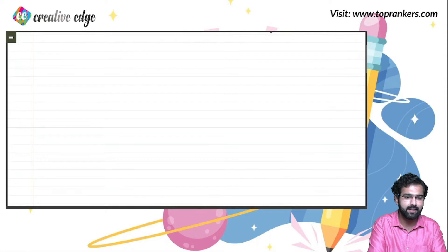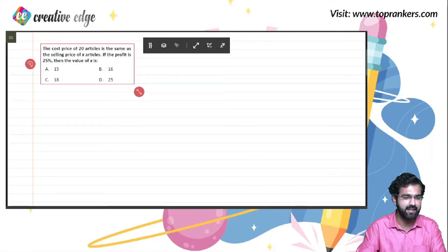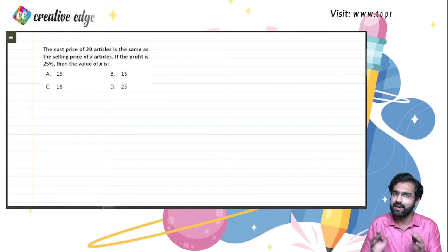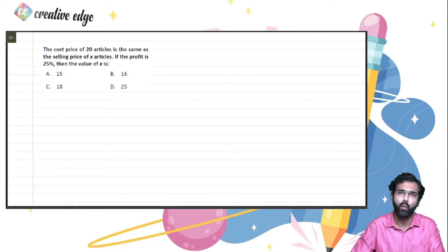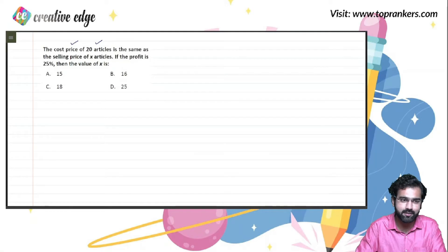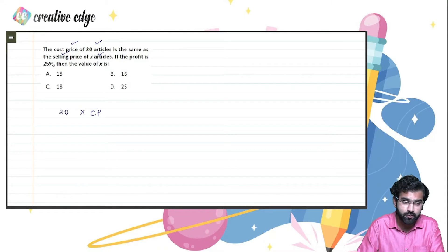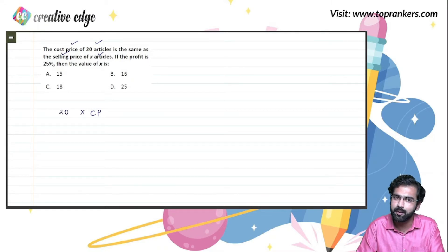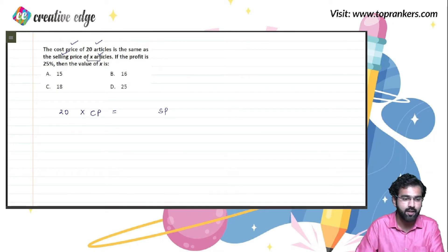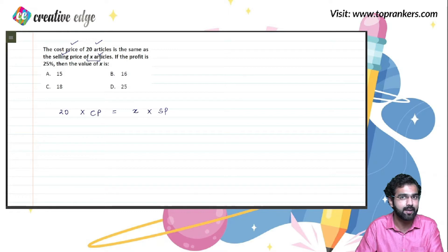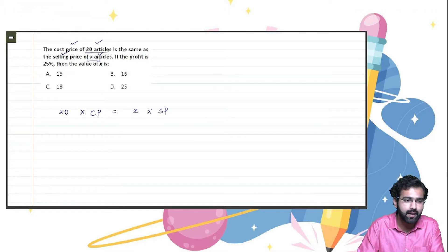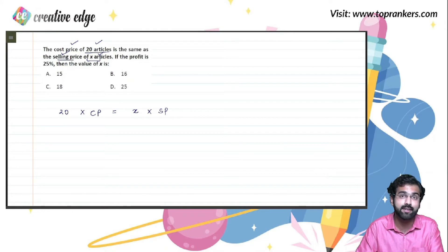Let's understand this topic better with an example. I hope you all can see this question on the screen. What are we told? The cost price of 20 articles is the same as the selling price of X articles. Let's say the cost price of one article is CP. Then the cost price of 20 articles is 20 times CP. Similarly, if the selling price of one article is SP, then the selling price of X articles is X times SP. And that is exactly what we are told: 20 articles' cost price equals X articles' selling price.